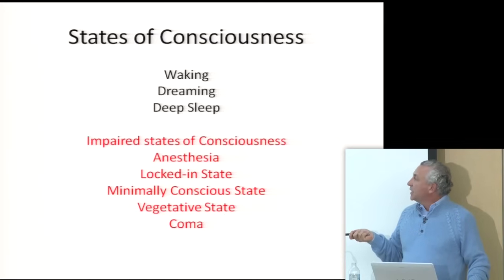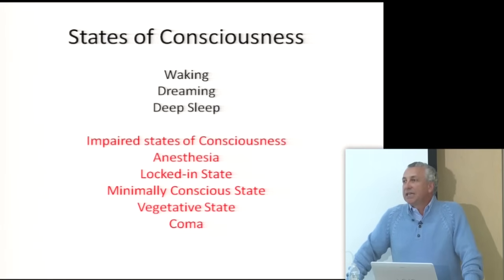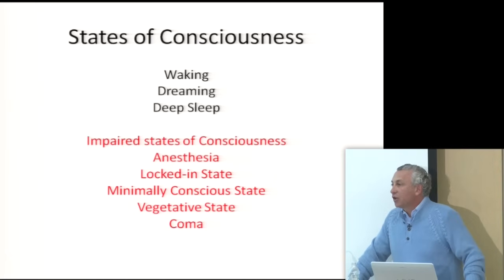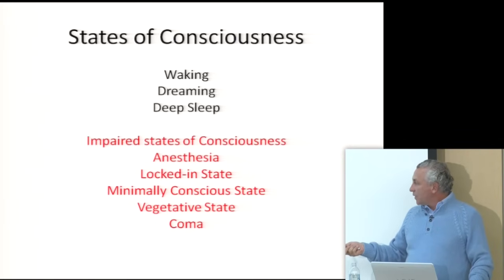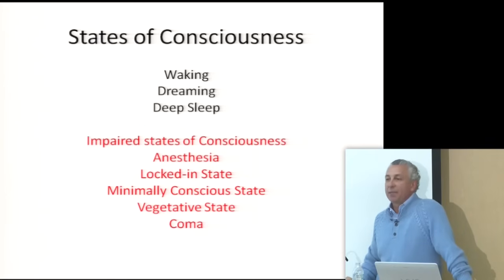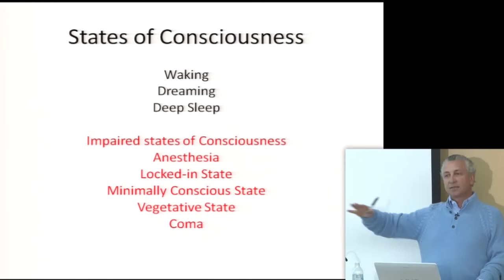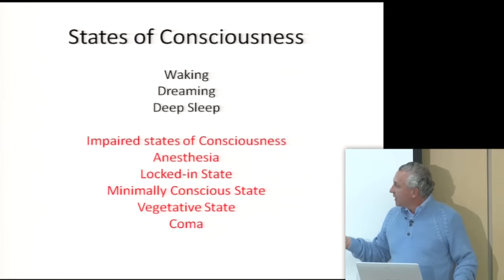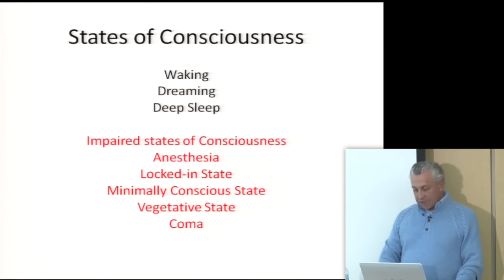The vegetative state is one where some aspects of the states of consciousness are available, but the person is totally non-responsive — no eye movement, no response to voice or touch, and their waking, dreaming, and sleeping cycles are disturbed. The coma state is one where the individual doesn't cycle through waking, dreaming, or sleep at all — they remain in just one minimal state, even more minimal than the minimally conscious state. This gives us an idea of the gradations of different levels of consciousness.